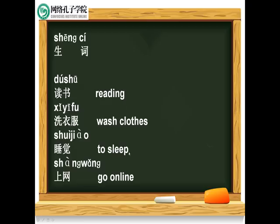睡觉，to sleep. 他在做什么呢? What is he doing? 他在睡觉。He is sleeping. 他在睡觉。The last one: 上网，go online. 他在做什么呢? What is he doing? 他在上网。He is going online. 很好。Now we need to read again.